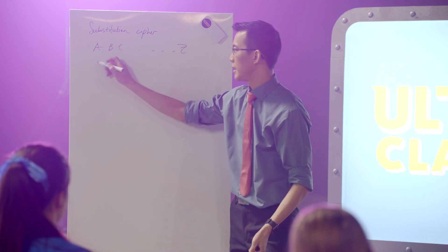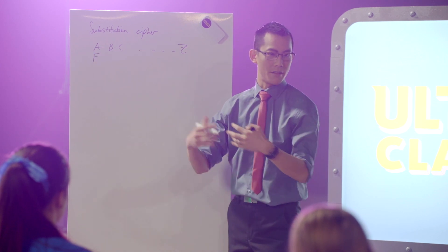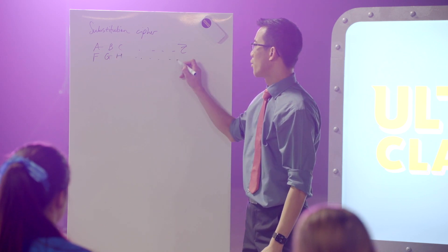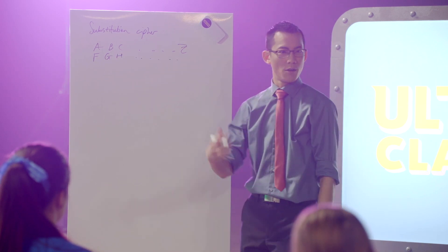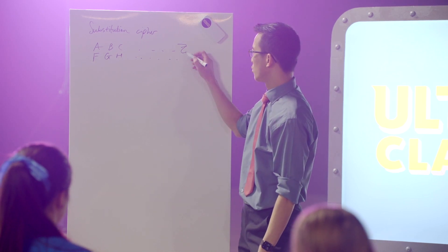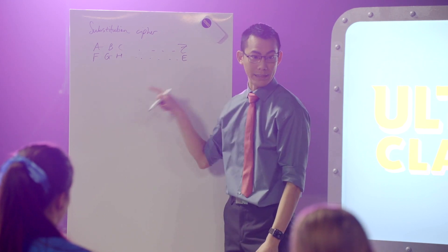And then the next letter along would become a G and an H all the way, and then I guess the Z would be, well you'd have to loop back around because there is not a 31st letter. I guess this would become an E so you've got the complete loop.